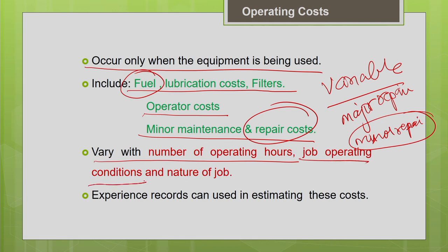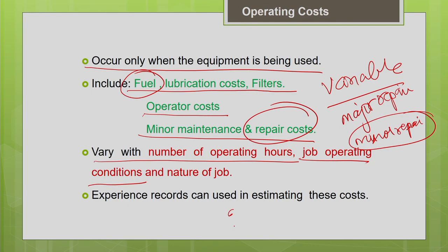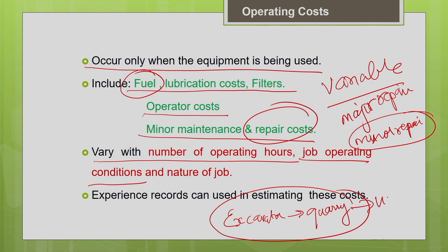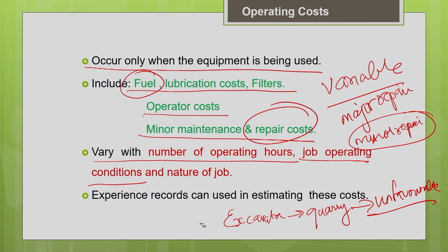Operating cost also depends on the job operating condition. The same equipment put under two different operating conditions — one severe/tough, one average — will show a significant difference in operating cost. For example, an excavator working in a quarry excavating rock pieces versus one handling ordinary earth on a construction site: the quarry excavator is in an unfavorable working condition, so its fuel consumption, power consumption, and repair/wear and tear costs will all be more.